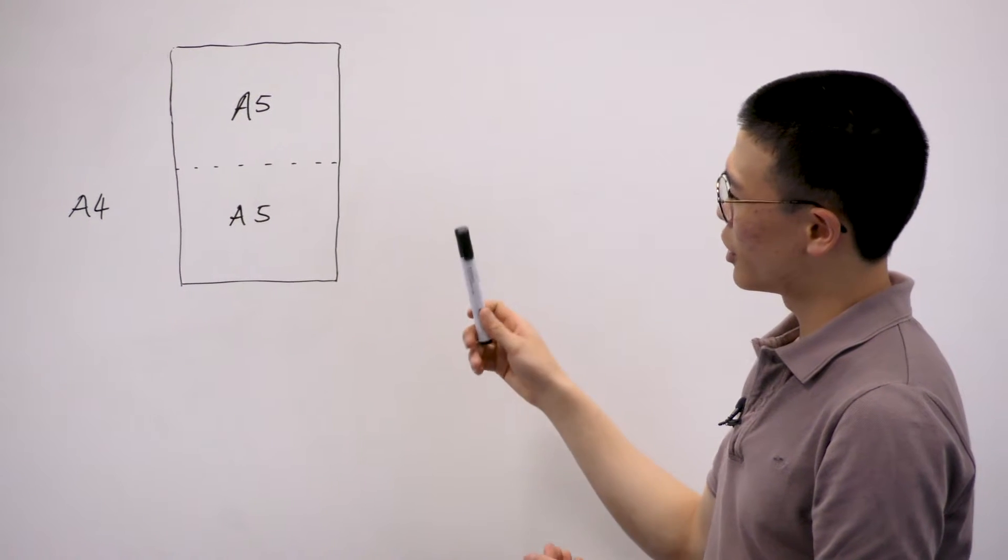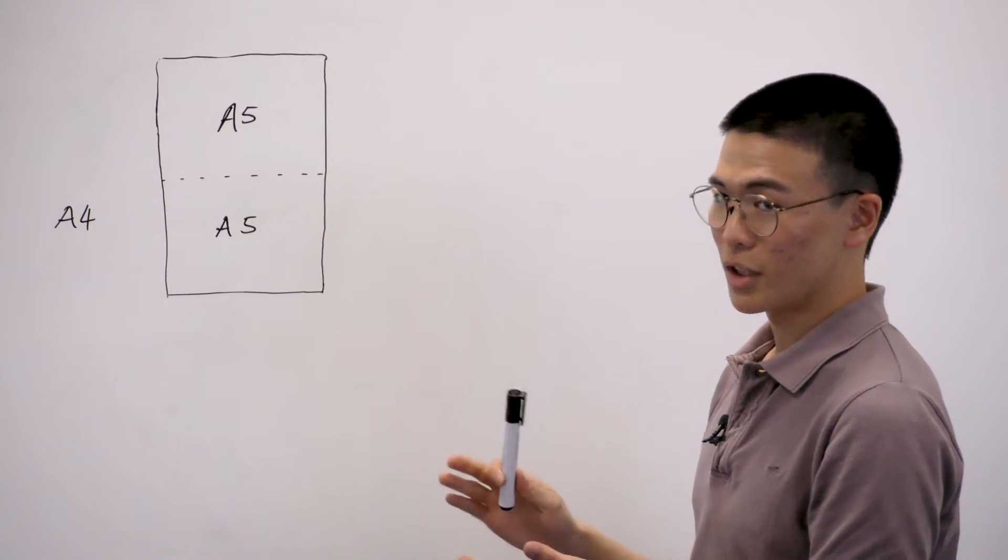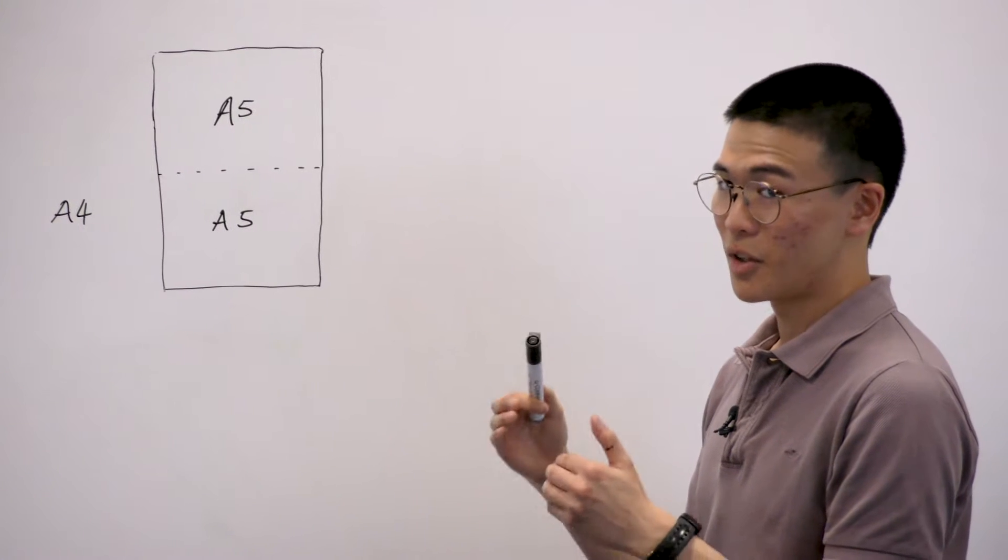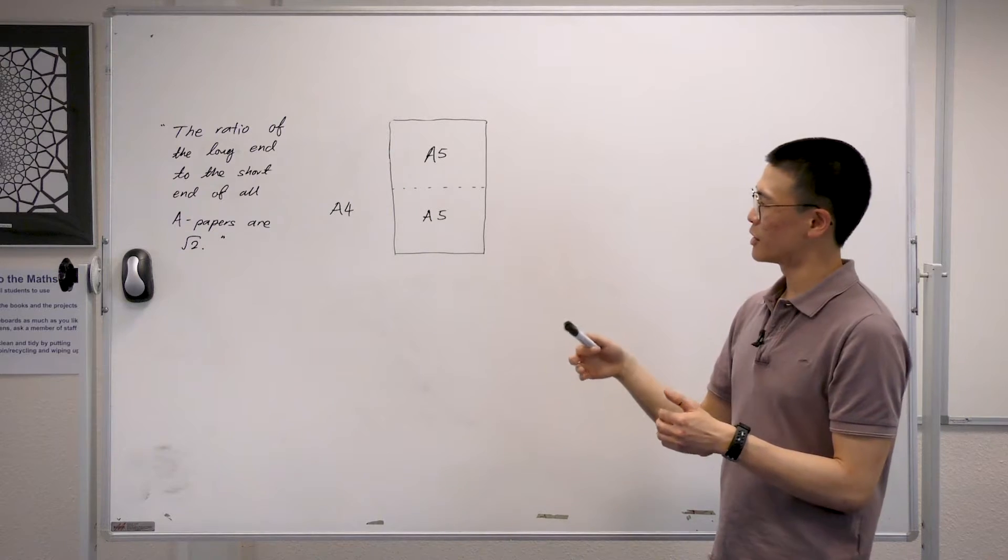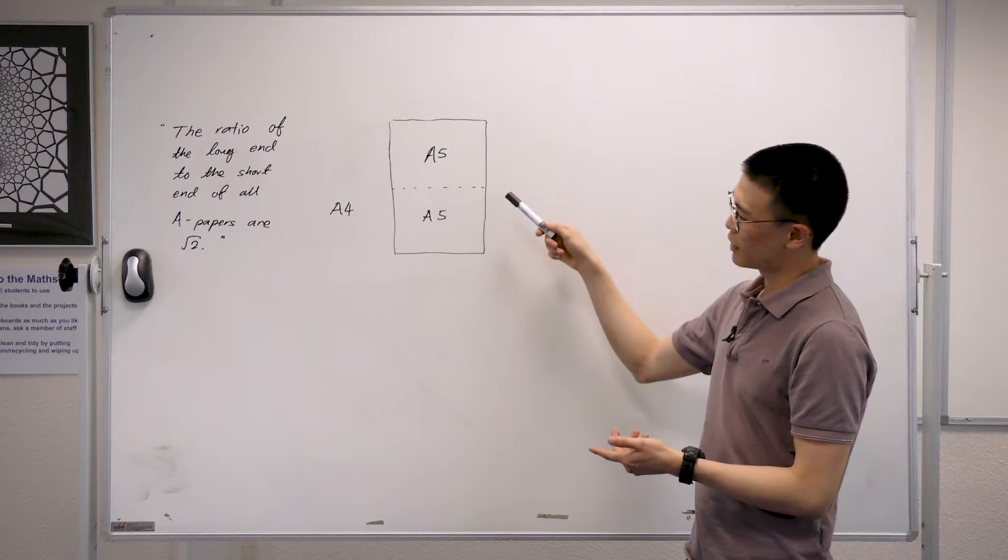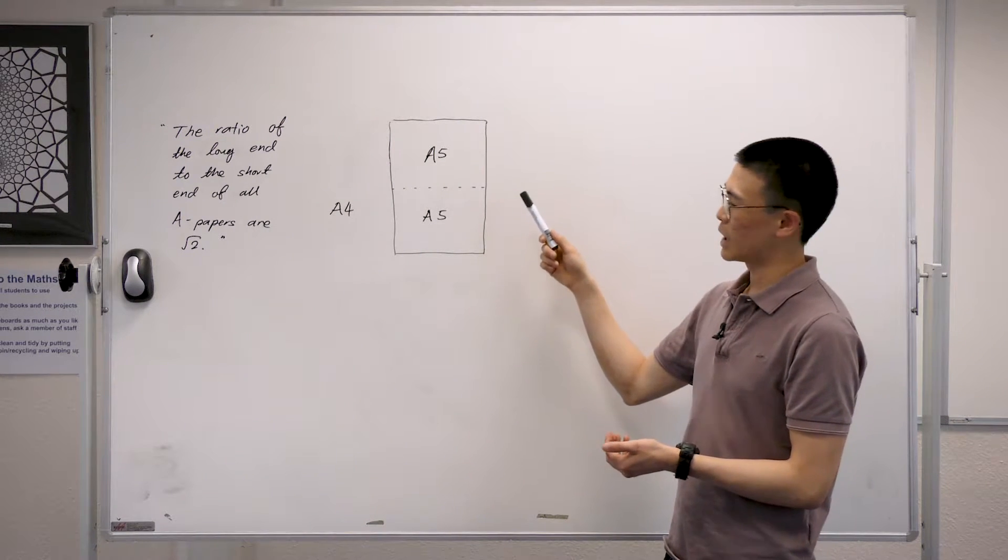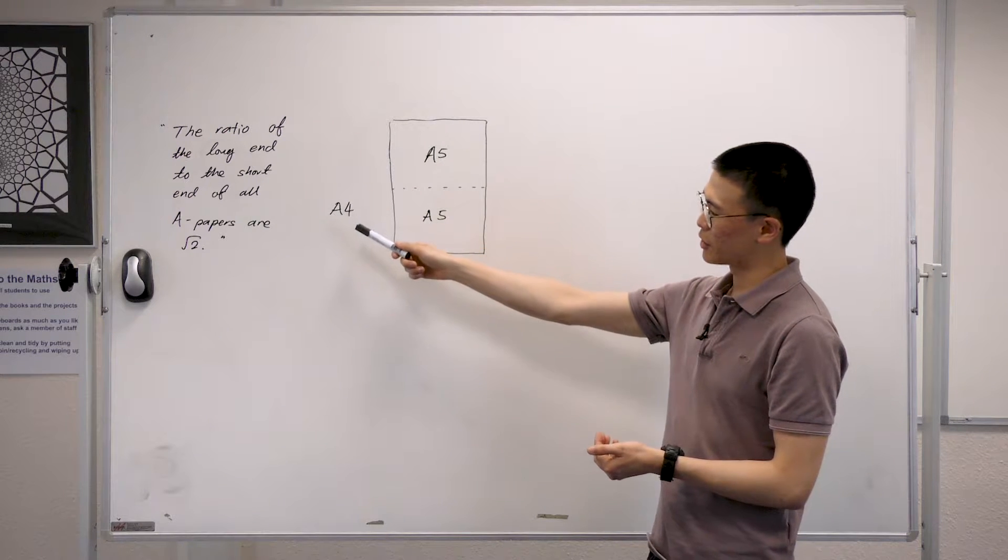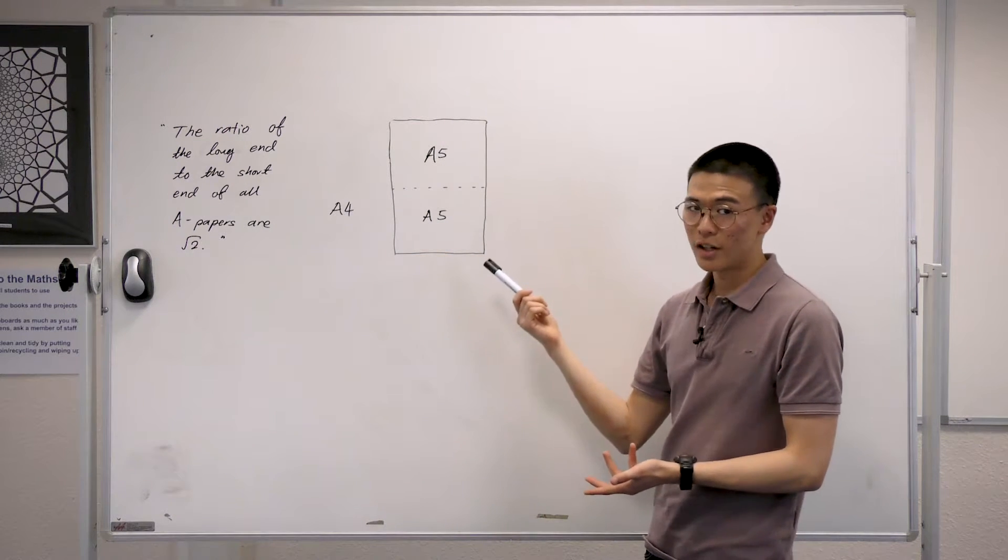And this is true for all A-sized papers, that if you fold it in half, you get A whatever number you have currently, just add it with 1. So if you start with an A2 paper, and if you fold it in half, you get an A3 size, and you fold it in half again, you get the A4, and subsequently for all the A-sized papers.